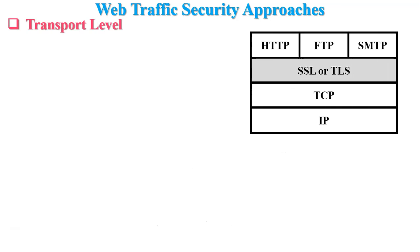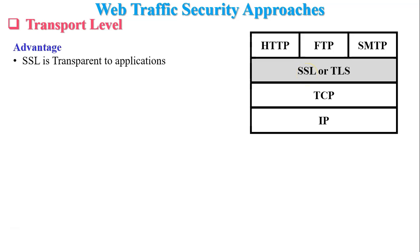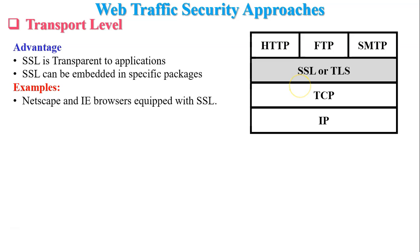The next one is transport-level security. The general-purpose solution implements security just above TCP. Examples of this approach are SSL and TLS — Secure Socket Layer and Transport Layer Security. An advantage of SSL is that it is transparent to applications, since the transport layer provides process-to-process delivery. Another advantage is that SSL can be embedded in specific packages; for example, Netscape and Internet Explorer are equipped with SSL, and most browsers have implemented the protocol.